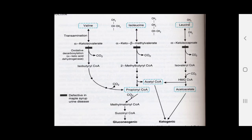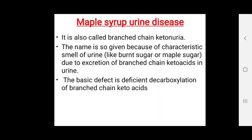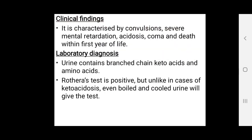When a defect occurs at the decarboxylation step (second step), it causes maple syrup urine disease (MSUD), also called branched-chain ketoaciduria. The name is given because of the characteristic smell of urine, like burnt sugar or maple sugar, due to excretion of branched-chain ketoacids. The basic defect is deficient decarboxylation of branched-chain ketoacids. Clinical findings include convulsions, severe mental retardation, acidosis, coma, and death within the first year of life.